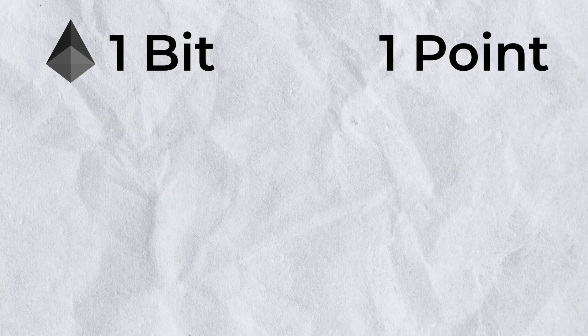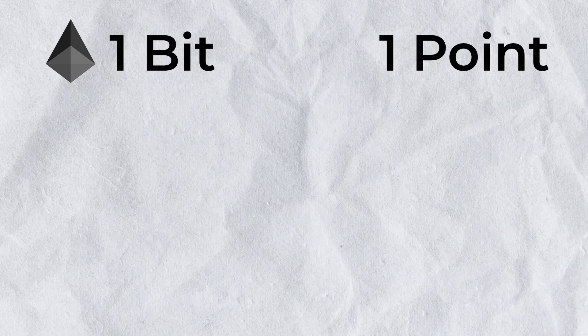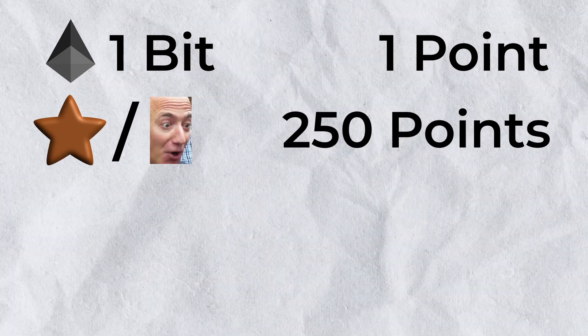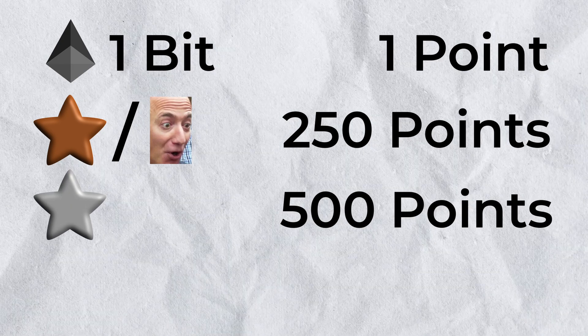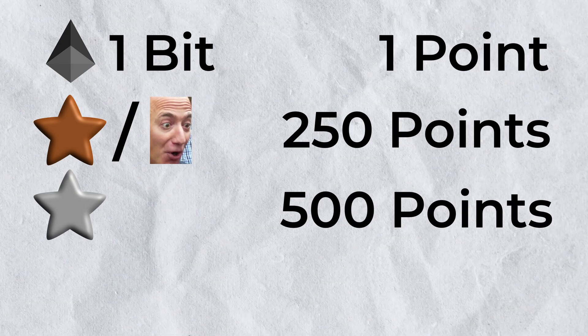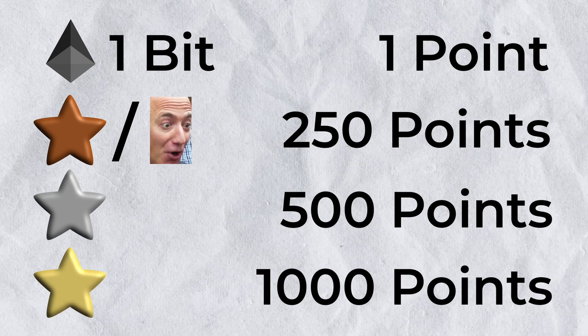For example, if you want 10 new subs, you set it to 10. And if you want 1000 bits, you set it to 1000. However, for the combo, you need to consider the total points you want. Each bit gives you one point, and each tier of sub gives you a different amount as well: 250 for Tier 1 or Prime, 500 for Tier 2, and 1000 for Tier 3.